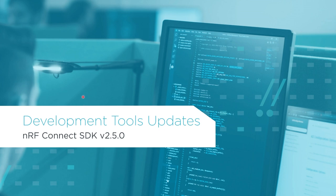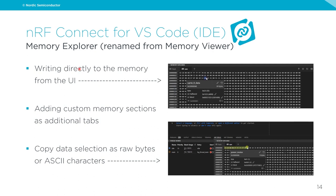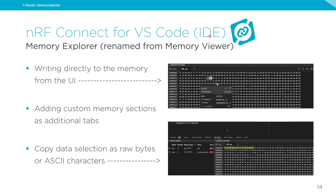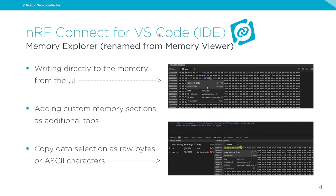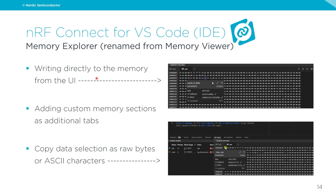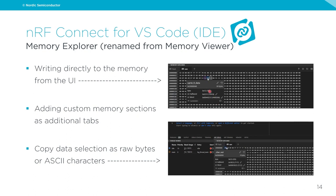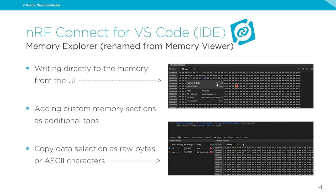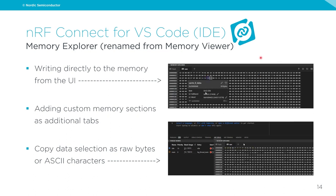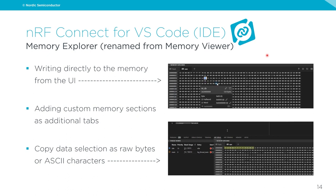Moving to development tools updates: in NRF Connect for VS Code, there is a feature formerly called Memory Viewer that has been renamed to Memory Explorer. The reason is that it now allows you to write directly into memory from the user interface. As shown in the animation, you can click on any given byte, click the pencil icon, and start overwriting memory at those locations. For example, you can update variables directly in RAM, like a counter or sensor value, from within the Memory Explorer.